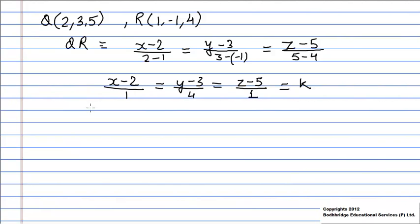So any point P which lies on the given line QR is given by (k + 2, 4k + 3, k + 5).